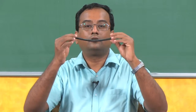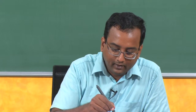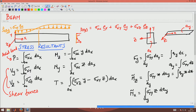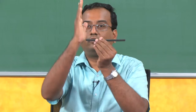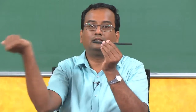The beam is loaded on its top face, causing it to bend. The stress resultants are the net force and net moment acting at the cut surface due to this traction. The net force in the axial direction is given by P = ∫σ_xx dA_x. The shear forces V_y and V_z are the shear force resultants, and the axial force P acts in the axial direction.